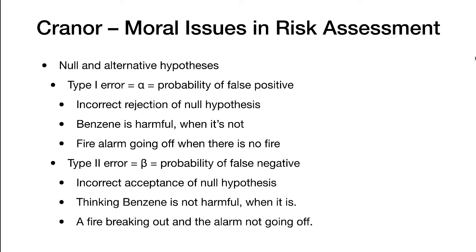So the two things to keep in your head to keep these straight: Alpha is the probability of a false positive. That's a fire alarm going off. Beta is the probability of a false negative. And that's a fire breaking out when the alarm doesn't go off.